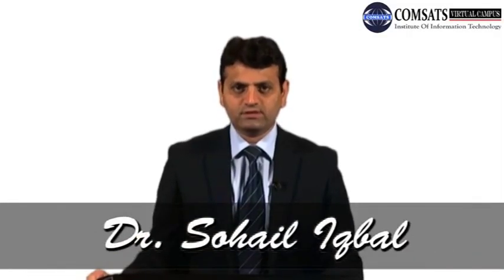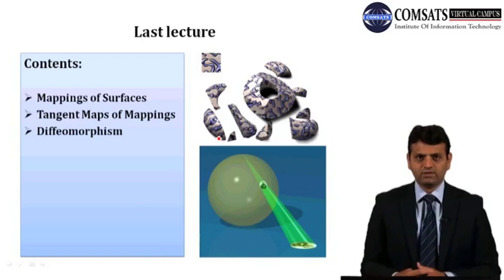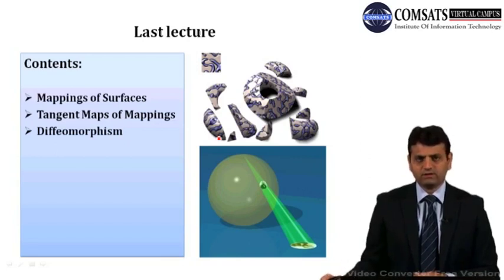Hello and welcome to lecture number 26 of Differential Geometry. In the last lecture, we studied mappings of surfaces and saw that when a function from one surface to another is differentiable, we can calculate the tangent map of those mappings. So if there is any mapping between two surfaces, the tangent map takes tangents of one surface to the tangents of another. After that, we introduced a very important class of mappings: diffeomorphisms, which we will study in today's lecture.